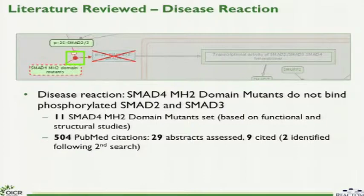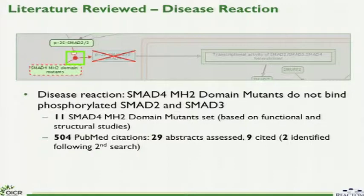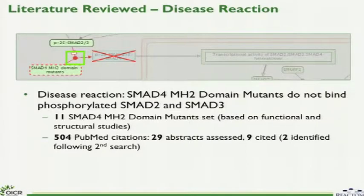Here's a disease reaction example. Normally, SMAD4 binds to phosphorylated SMAD2 and SMAD3 — a normal reaction typically cites one or two papers. However, in this case there are 11 characterized SMAD4 mutations based on functional and structural studies. An initial PubMed search for information pertaining to this single reaction returns 504 citations. The curator assessed 29 of those abstracts and ended up citing nine papers — eight more than normal for this reaction. Text mining could be very valuable in triaging documents relevant to disease reaction curation.